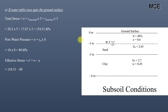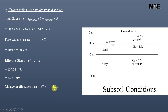Effective stress = 154.51 − 80 = 74.51 kPa. Comparing to the initial condition (97.91 kPa), the effective stress has decreased. The change in effective stress = 97.91 − 74.51 = 23.4 kPa. Remember: when the water table rises to the ground surface, the value of effective stress decreases.